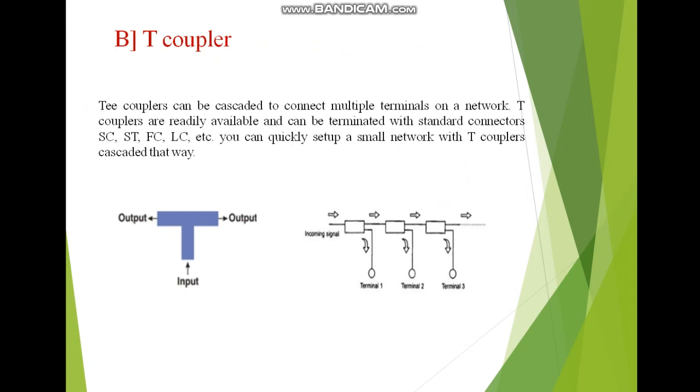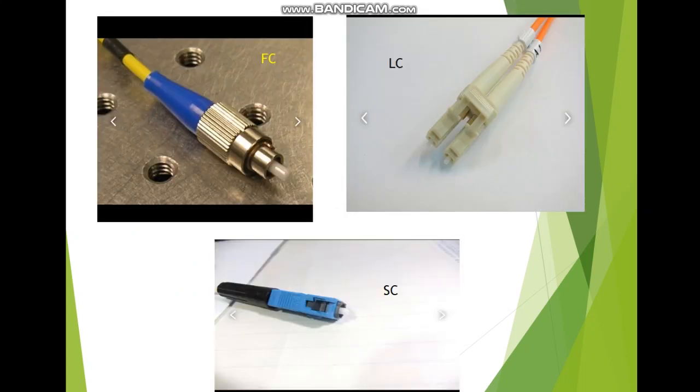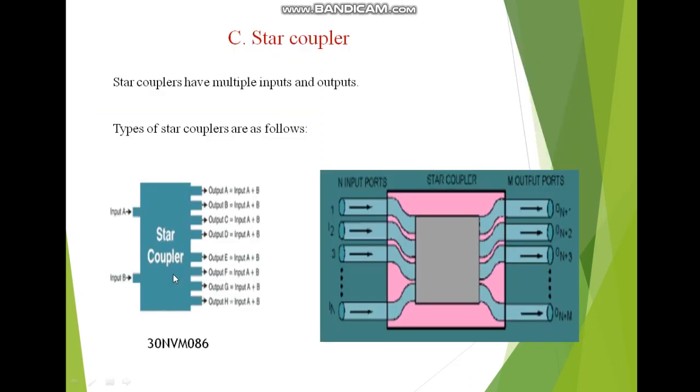What does mean by SC, ST, FC, and LC? SC is a standard connector, ST is a straight tip connector, FC is a ferrule connector, and LC is a local connector. We can connect these connectors on the basis of our application needed. Next, these are the images of all the different connectors: FC, LC, and SC connector.